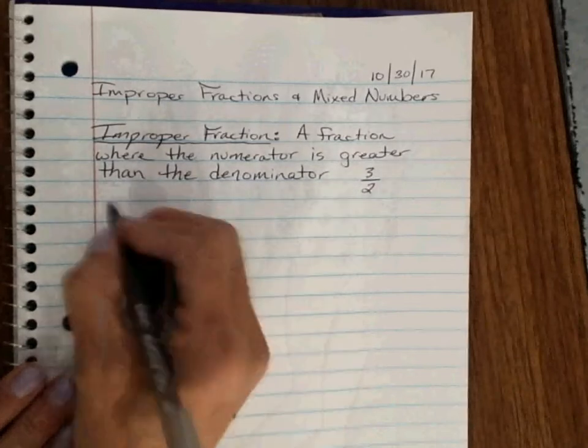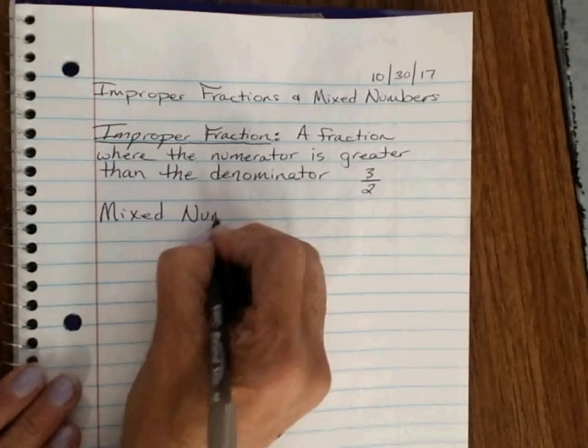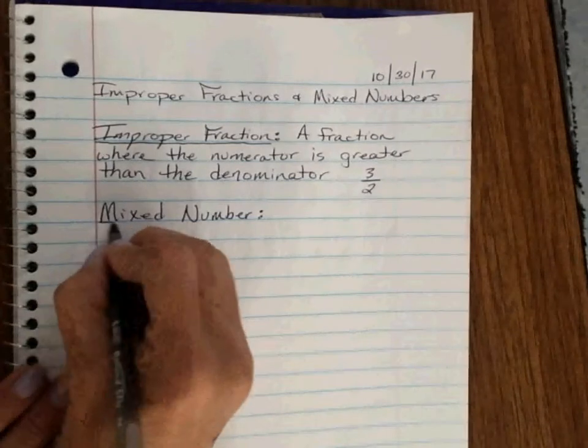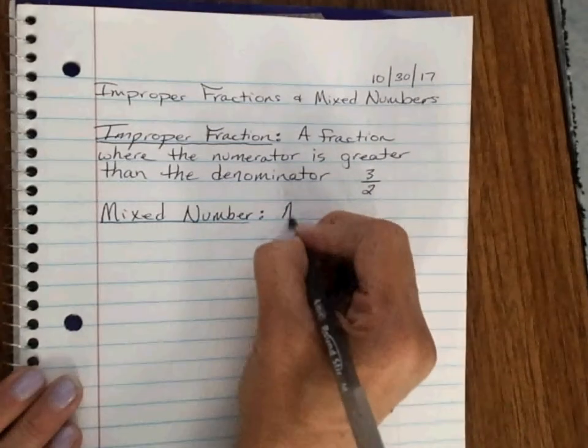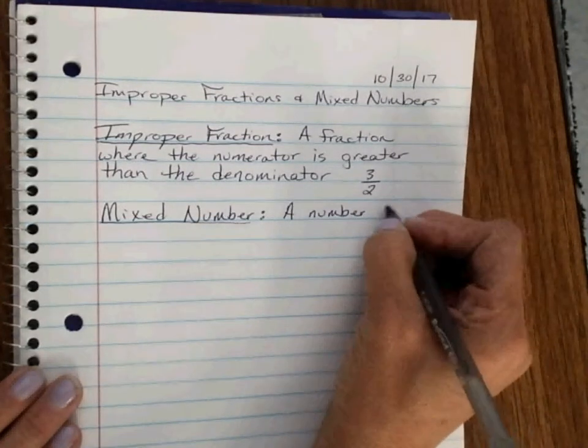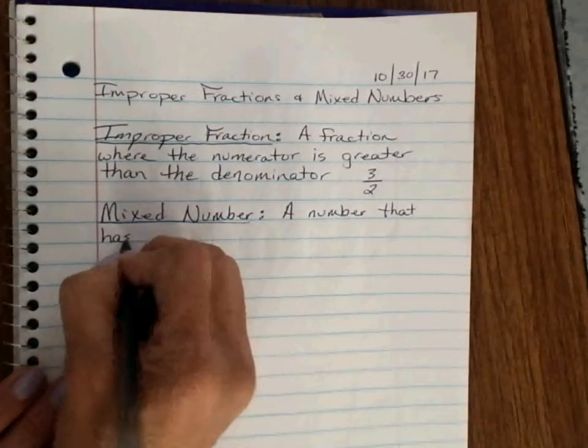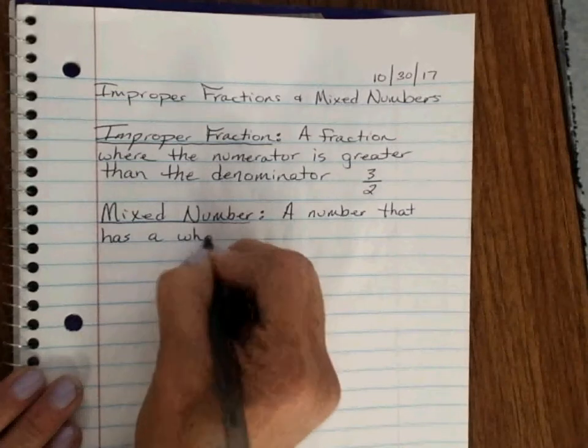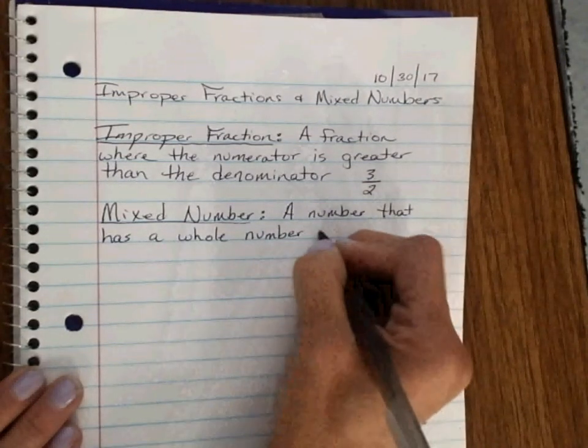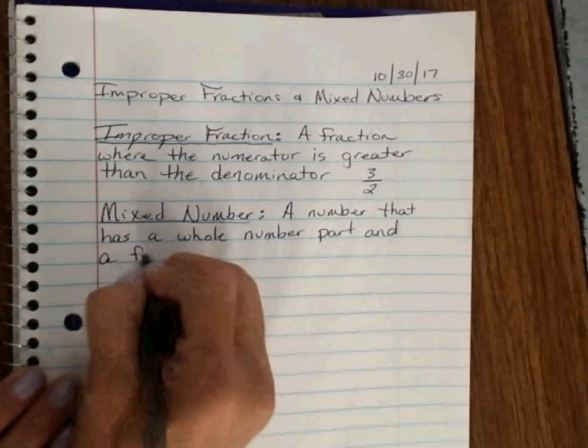What is a mixed number? A mixed number is a number that has a whole number part and a fraction part.